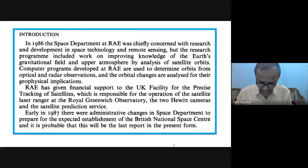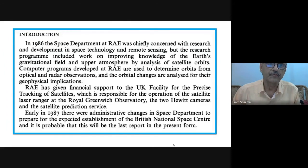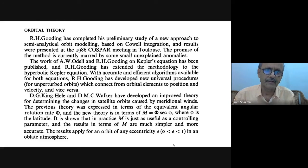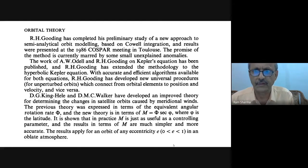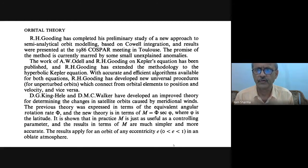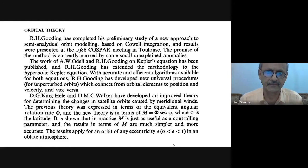Some of the works carried out during that year are discussed — you can see how many important jobs they carried out. Regarding orbital theory, Professor Gooding was excellent in orbit determination, and he also contributed to analytical studies. He completed a study on a new approach to semi-analytical orbit modeling based on Covill integration. Results were presented at the 1986 COSPAR meeting. The promise of the method was marred at that time by some small unexplained anomalies.